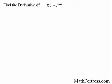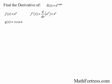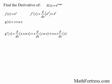Find the derivative of r of x equals e raised to the power of x times cosine of x. We are dealing with a composition of functions where the outer function is equal to e to the x and the inner function is equal to x times cosine of x. We use the chain rule, and in order to use it, we need the derivatives of the outer and inner function. The derivative of the outer function is equal to e to the x, and in order to find the derivative of the inner function, we actually need to apply the product rule.